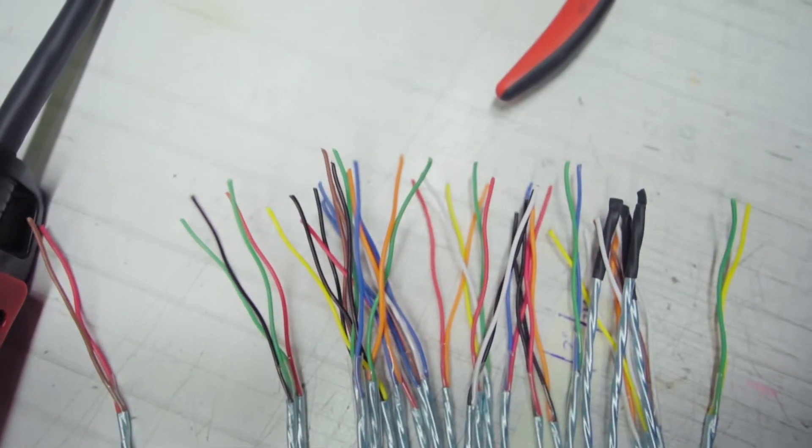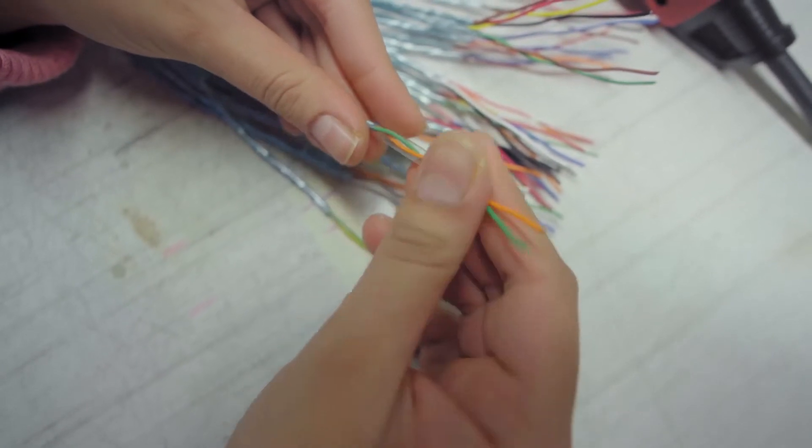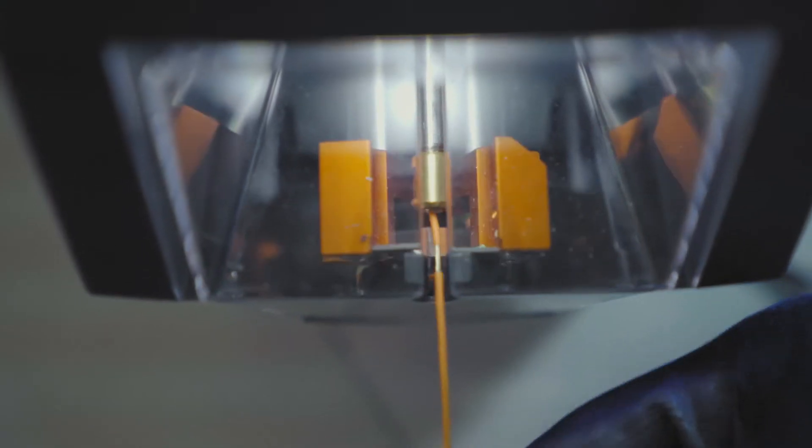The first step in the assembly process of this product is cutting and preparing the cable. This is a 50 conductor cable which needs to be stripped. Each individual conductor needs to be cut.